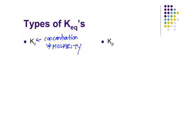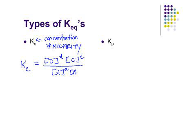Now when you write a KC, you're going to do the products raised to some coefficient based on the coefficient from the balanced equation over the reactants raised to its own coefficient.